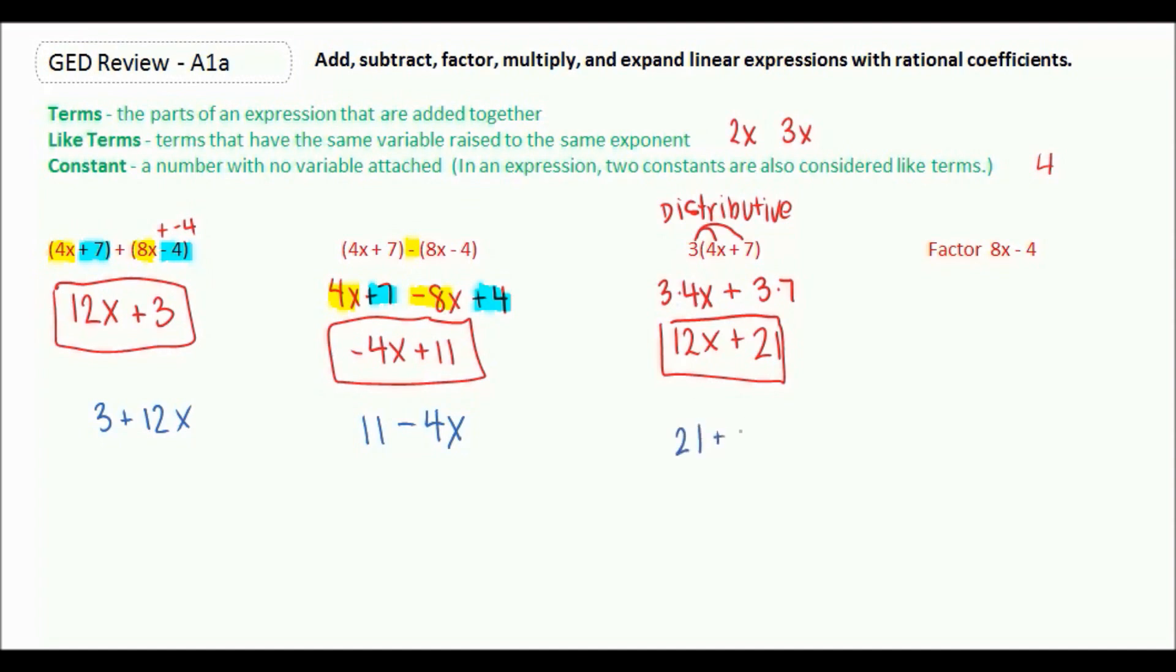We now have an example of factoring, and this example that we have is kind of the most basic type of factoring we could do. It's pretty much the reverse distributive property. Here we had a number on the outside and we multiplied it to both things on the inside to get rid of our parentheses. Now we want to see if there's a number that goes into both of our terms, and we're going to pull it out and kind of create some parentheses.